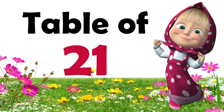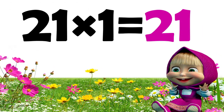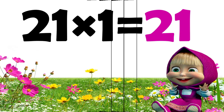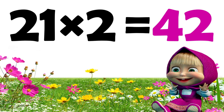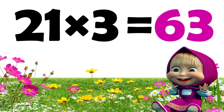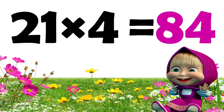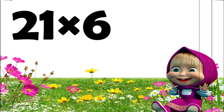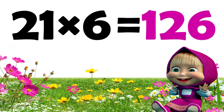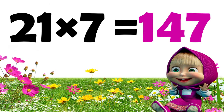Table of 21. 21 1s are 21, 21 2s are 42, 21 3s are 63, 21 4s are 84, 21 5s are 105, 21 6s are 126.